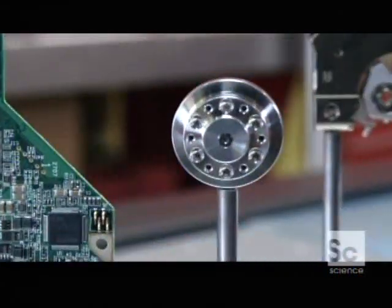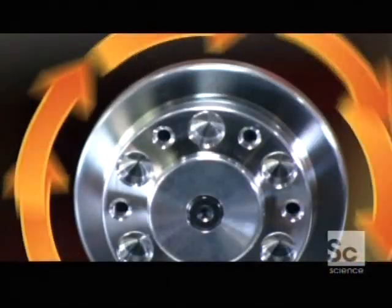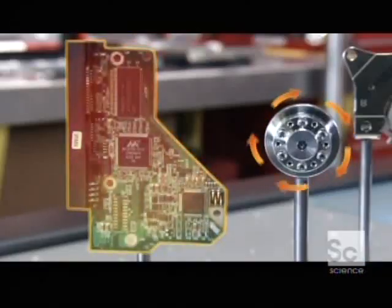An electric motor spins the hard drive's disc at exactly 7,200 revolutions per minute. The circuit board keeps the speed constant.